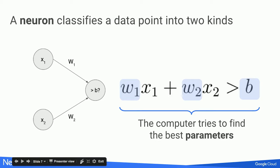What the neuron did was choose the right combination of weights and biases—exactly the same thing you'd do when writing a classification program. A single neuron takes inputs x1, x2, through xn, and multiplies them with weights w1, w2, through wn. That's exactly what you'd do in your program code. But the huge difference is that you let the computer find the best combination of parameters rather than specifying them yourself.